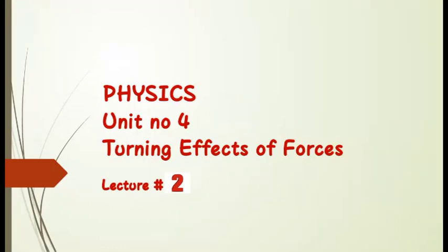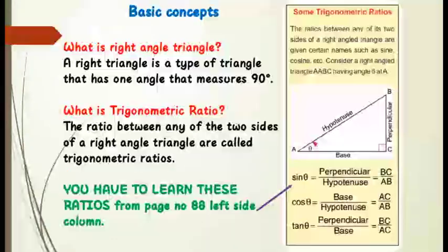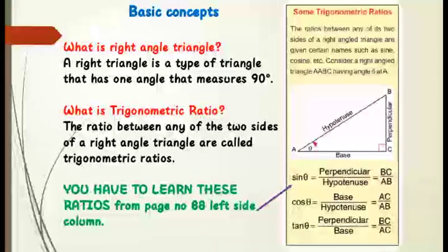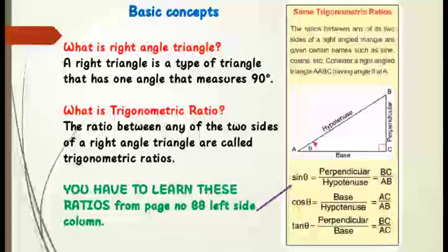Before starting our new topic, we have some basic concepts that you should know. You can see on your screen. First of all, what is a right angle triangle? The right angle triangle is a triangle in which one angle is 90 degrees. You can see the figure mentioned on your screen. The other two angles are less than 90 degrees.